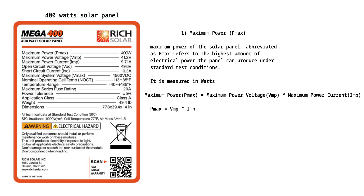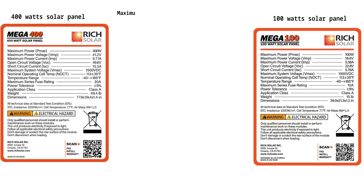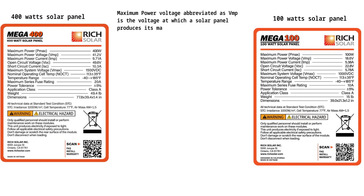Next, we are going to look at maximum power voltage. 2. Maximum power voltage, abbreviated as VMP, is the voltage at which a solar panel produces its maximum power under standard test conditions. The rating of the maximum power voltage of a solar panel is very important.